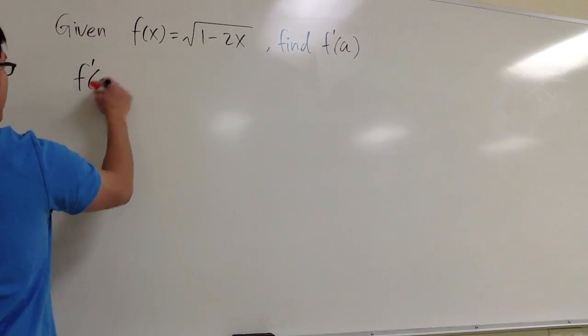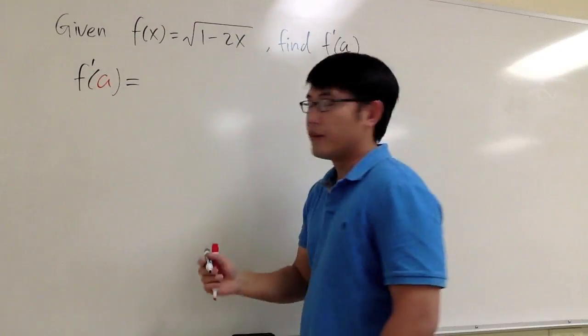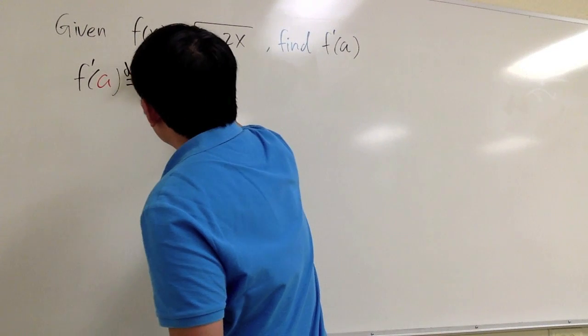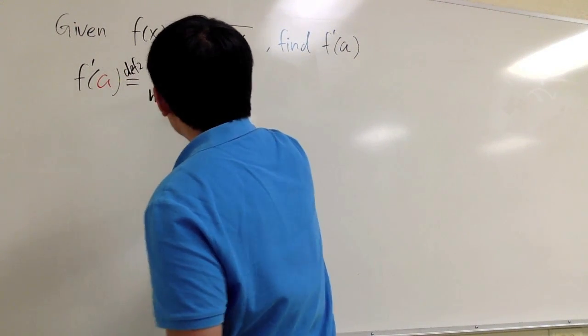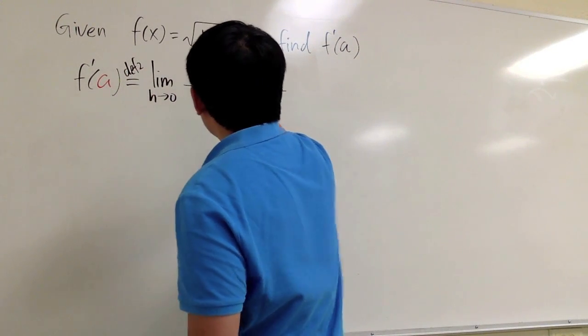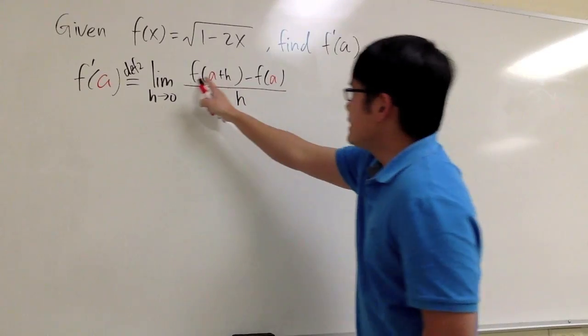I will begin by writing down the definition of the derivative. We are going to use the second definition: f prime of a is defined as the limit as h goes to 0 of f of a plus h minus f of a, over h.